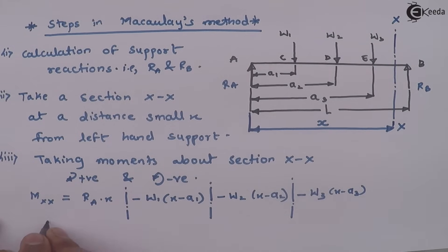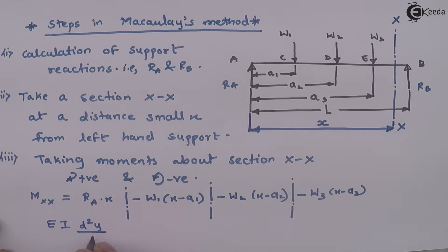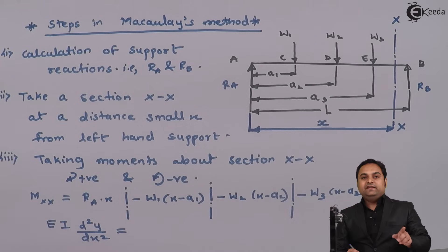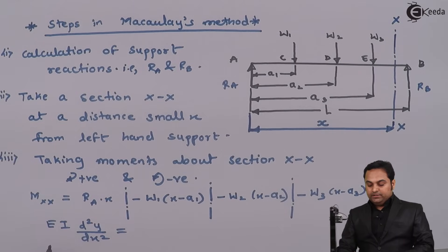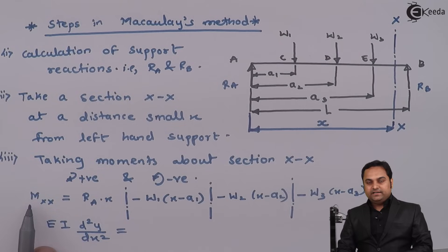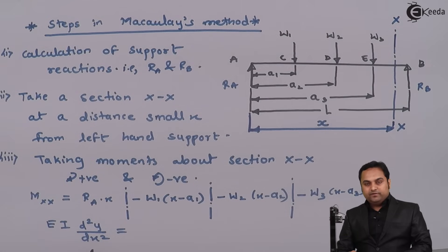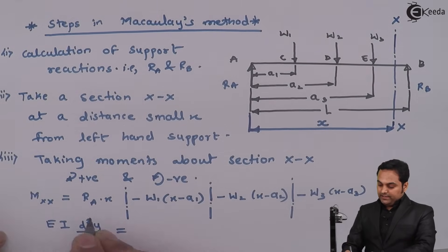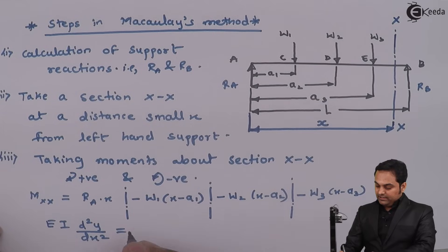Once we get this bending moment equation, the moment at X-X can be made equal to EI·d²y/dx², because we can write the bending moment at any section using this formula. So we replace moment at X-X by EI·d²y/dx², and the remaining terms stay as they are.